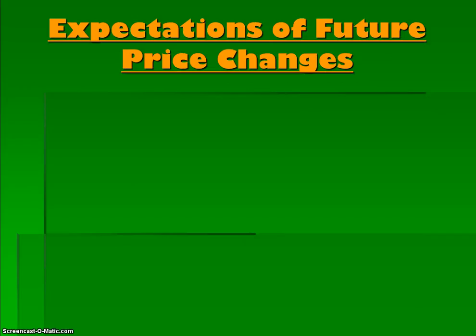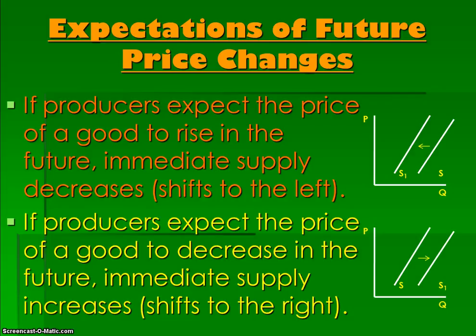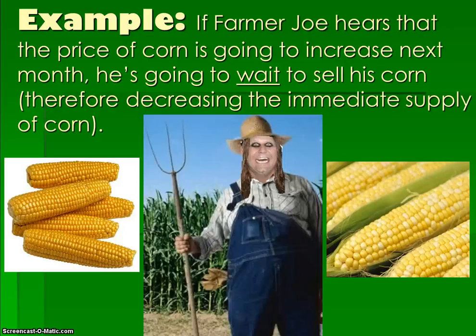The third E is Expectations of future price changes. If producers expect the price of a good to rise in the future, then immediate supply will decrease and shift to the left because producers would rather wait and sell their product later when the price goes up and they can make more money. Conversely, if producers expect the price of a good to decrease in the future, immediate supply will increase or shift to the right. For example, if Farmer Joe hears that the price of corn is going to increase next month, he's going to wait to sell his corn, therefore decreasing the immediate supply of corn.